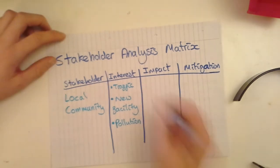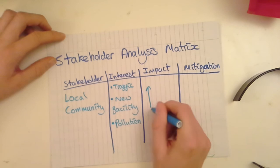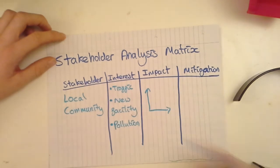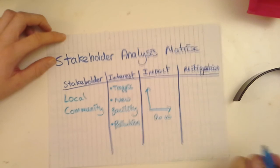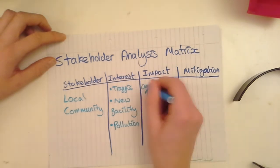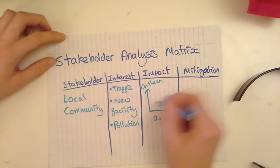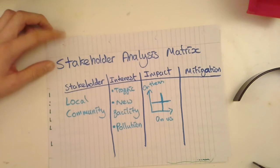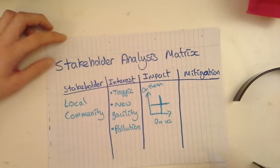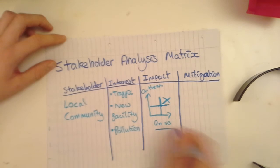So we can look at the actual impact we're having on our stakeholder and the impact they're having on us. We can divide this into four quadrants. We're going to put our local community in the high-impact area, because they're going to have quite a big effect on us.